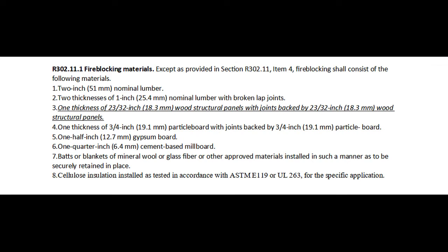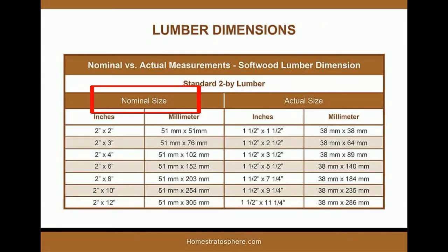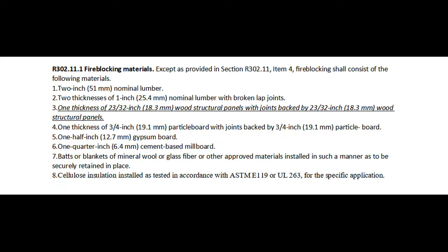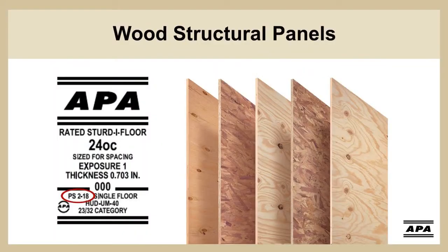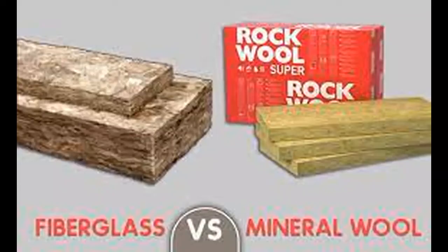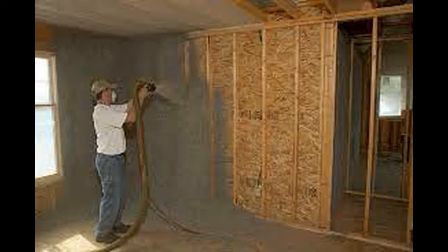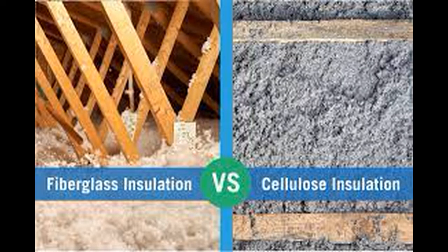R302.11.1 Fire Blocking Materials. Except as provided in Section R302.11 Item 4, fire blocking shall consist of the following materials: 1. 2-inch nominal lumber. 2. 2 thicknesses of 1-inch nominal lumber with broken lap joints. 3. 1 thickness of 23/32-inch wood structural panels with joints backed by 23/32-inch wood structural panels. 4. 1 thickness of 3/4-inch particle board with joints backed by 3/4-inch particle board. 5. 1/2-inch gypsum board. 6. 1/4-inch cement-based mill board. 7. Bats or blankets of mineral wool or glass fiber, or other approved materials installed in such a manner as to be securely retained in place. 8. Cellulose insulation installed and tested in accordance with ASTM E119 or UL263 for the specific application.